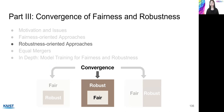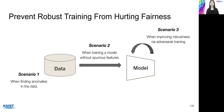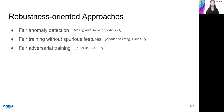The second direction is robustness-oriented approaches, where the goal is to make robust training fairer. As illustrated before, robust training is designed to improve overall accuracy but may discriminate against groups — for example, small groups may have much worse accuracy than large groups. Robustness-oriented approaches have been proposed for three types of techniques: first, when finding anomalies in the data, the anomaly detection itself should avoid being discriminative; second, when training a model without spurious features, these features must be selected carefully to prevent hurting fairness; and third, when making model training robust against noise, the adversarial training for robustness should also avoid being discriminative.